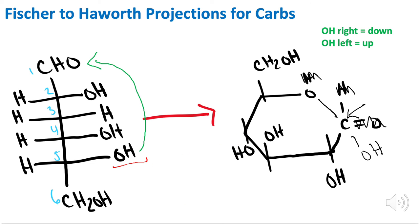So if we were to write out the transformation, if we're going from alpha to linear to beta, the beta will be preferred 64% of the time, whereas alpha will be preferred 36% of the time, whereas linear is very, very rare. So it's only 0.01% because linear is less stable compared to the cyclic form.